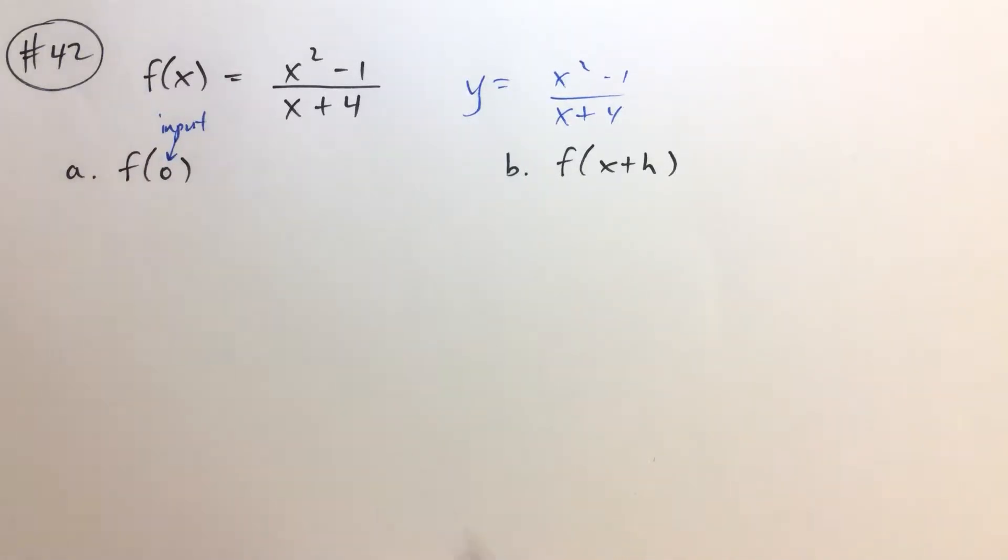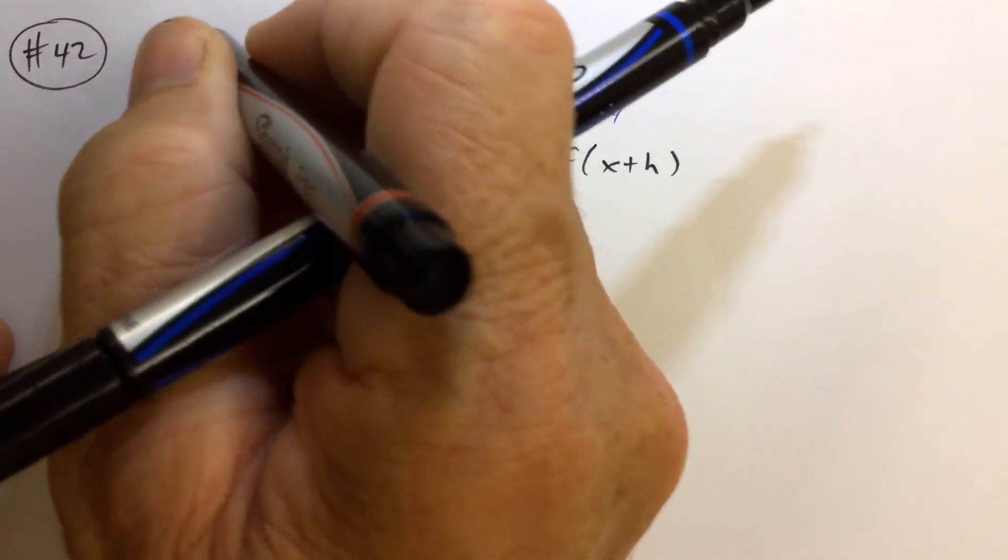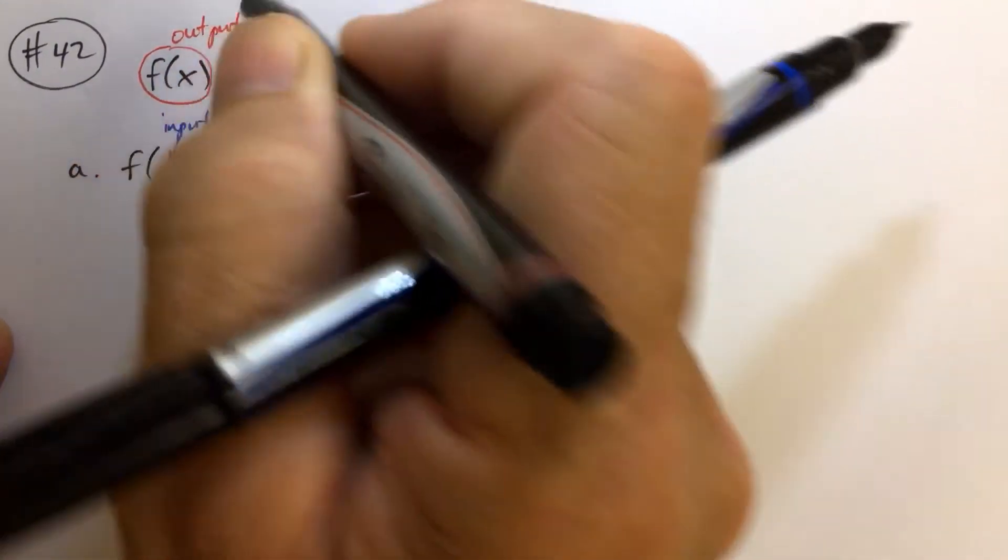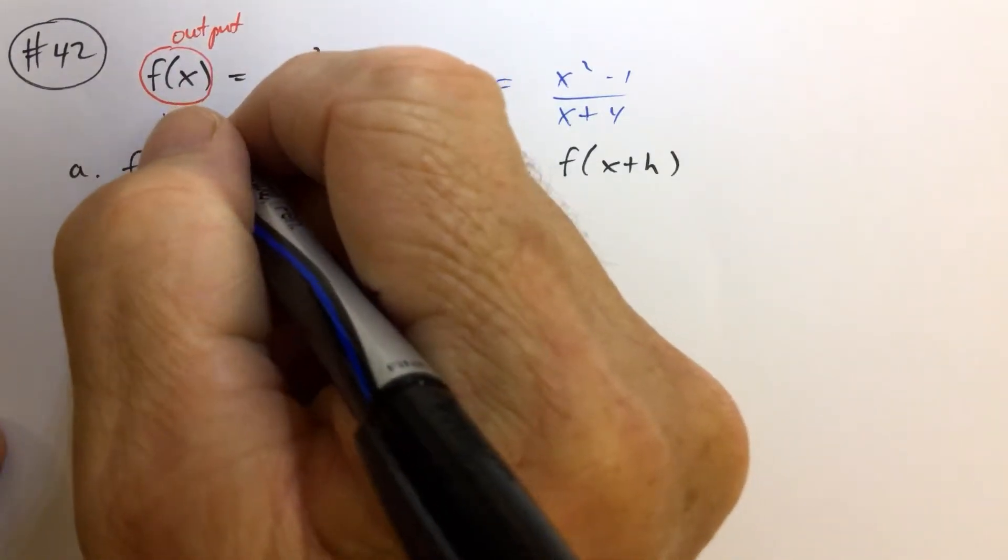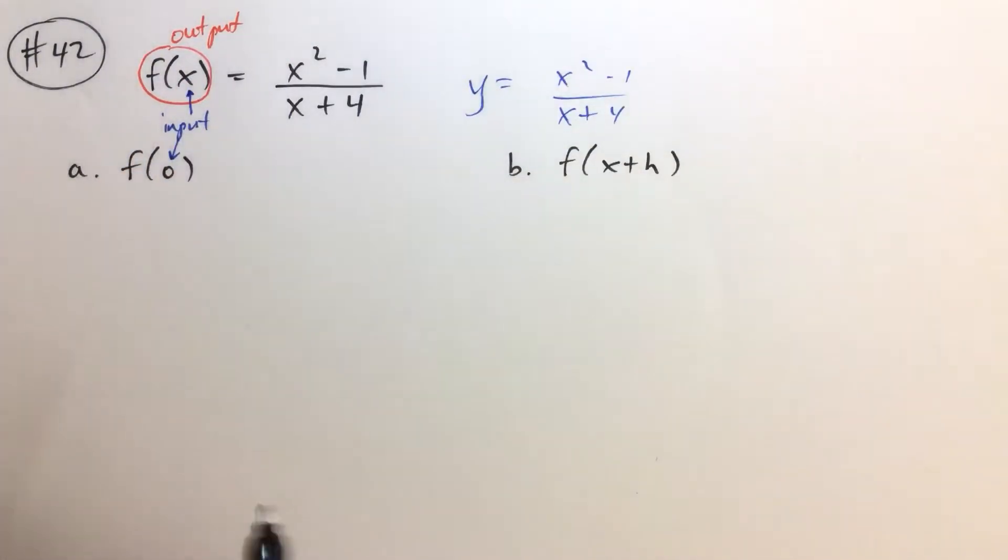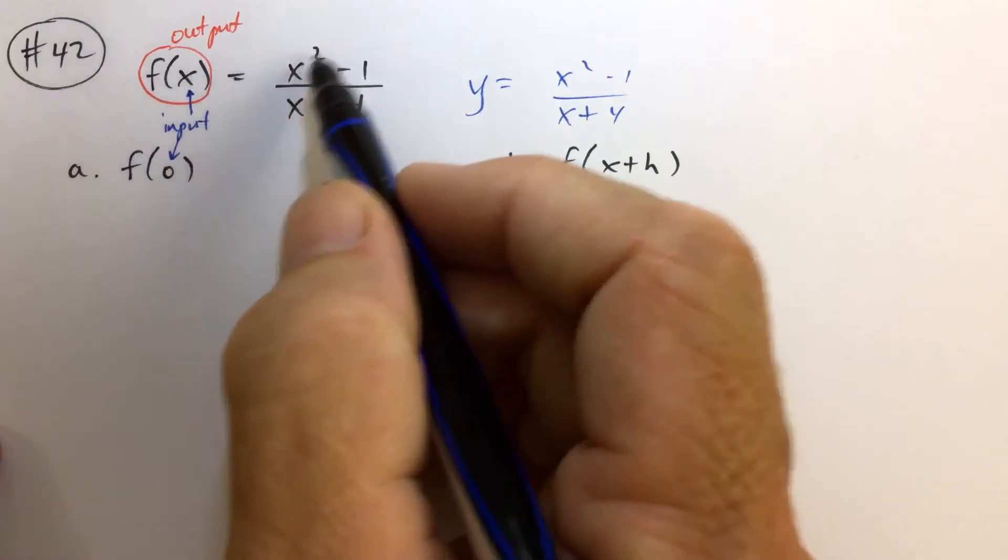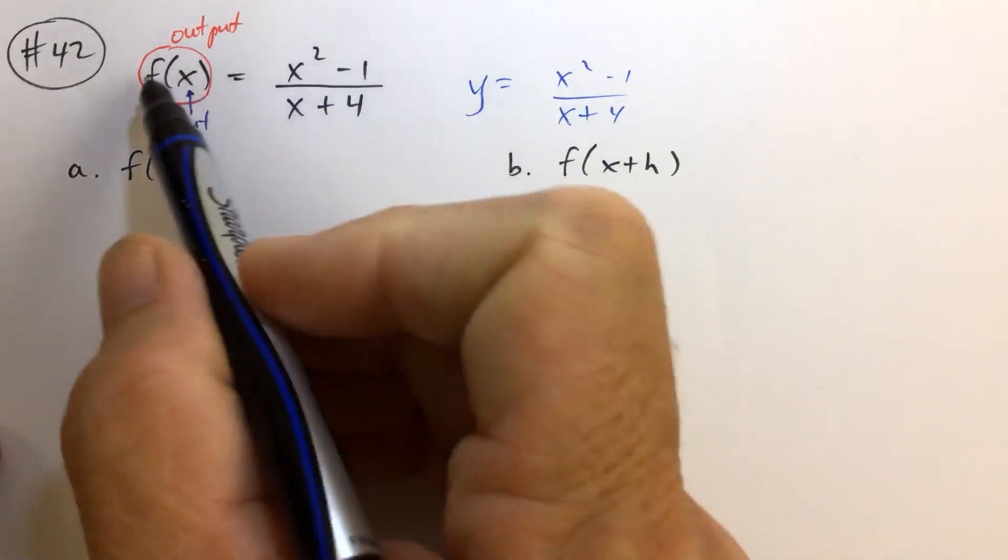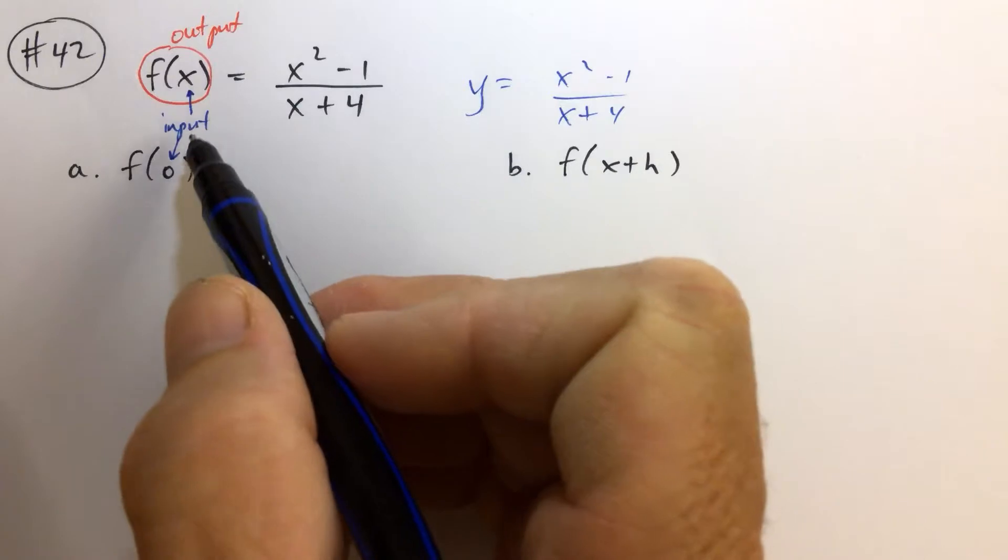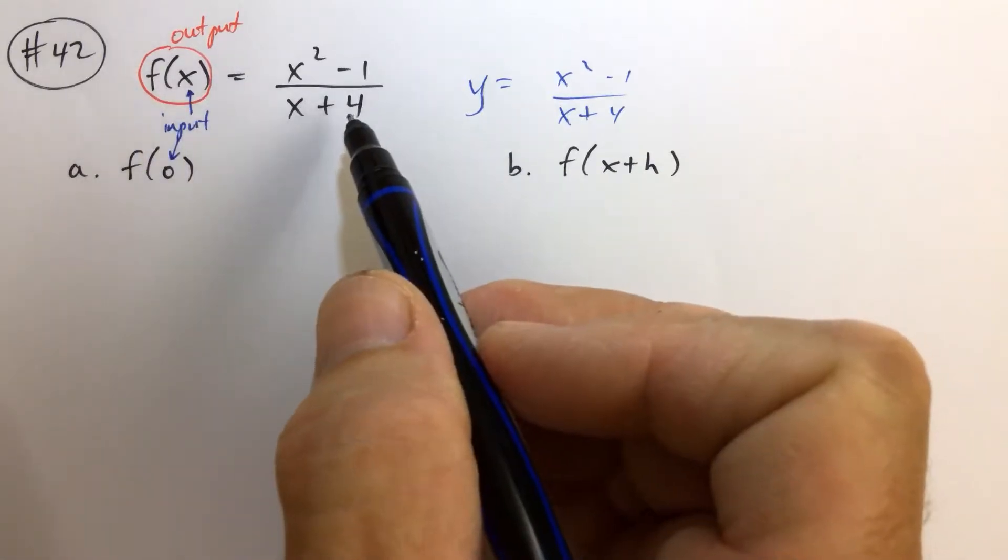And what do you get out? Well, the f of something, the f of x, is your output. And I pointed to the 0 as the input, but also the x as the input. And everywhere you see an x, in this particular rule, remember a function is a rule. It says, okay, for each input, I'm going to assign to you one output. It's a function.